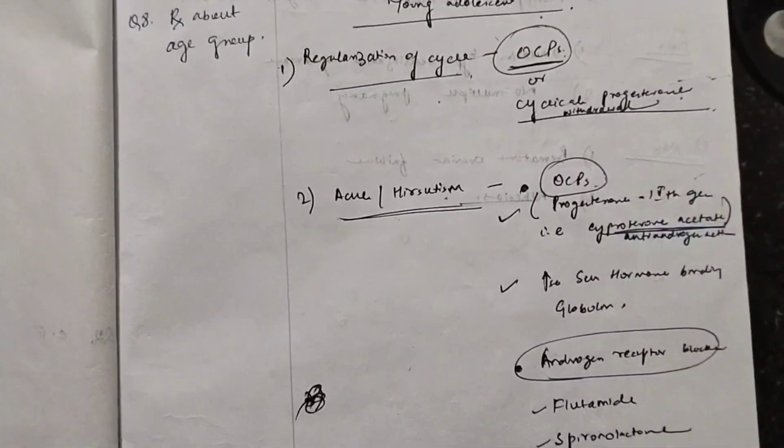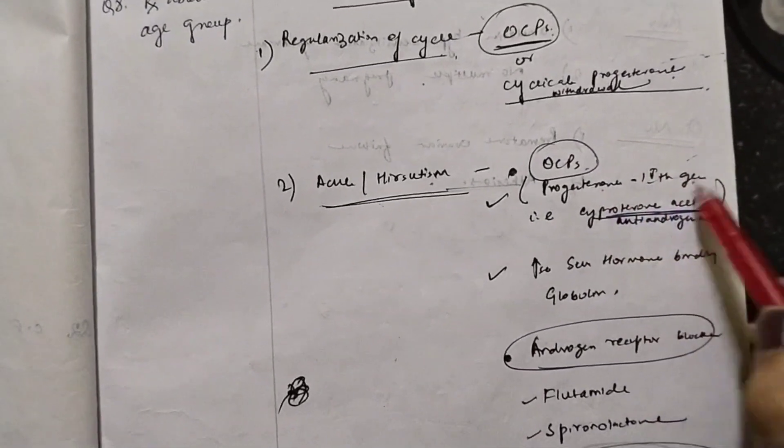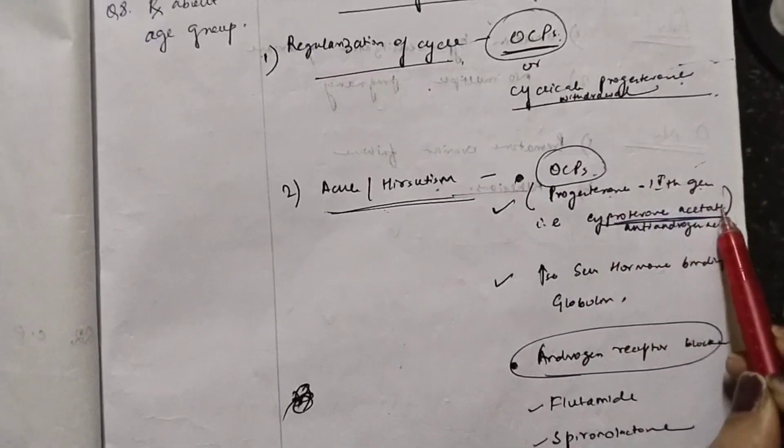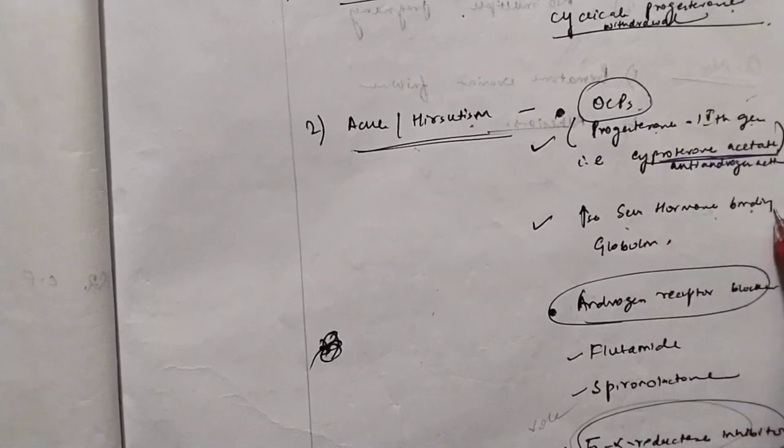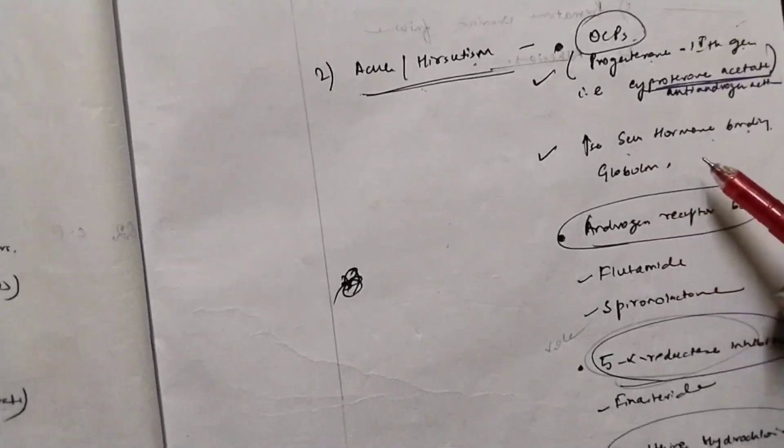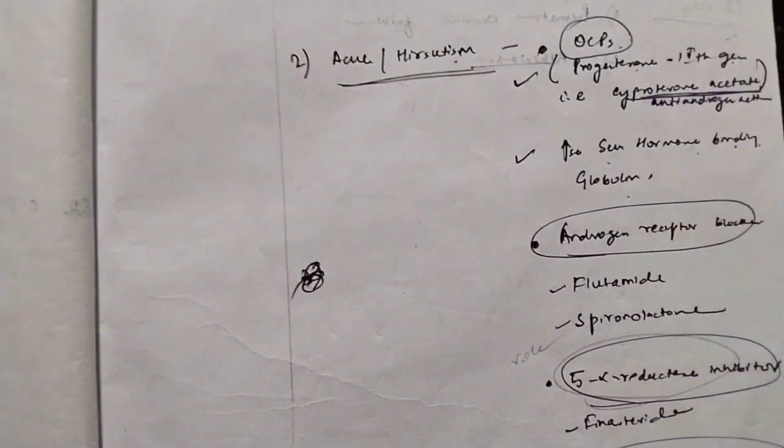For the clinical manifestations of PCOD, that is acne and hirsutism, you can give OCPs. Here the progesterone of the fourth generation are given, that is called cyproterone acetate. You can also increase the serum hormone binding capacity by giving the globulins.